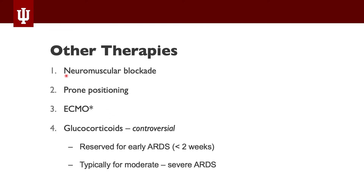Other therapies include neuromuscular blockade — completely paralyzing the patient to improve ventilator synchrony, because any dyssynchrony such as double-breathing can cause more volutrauma and barotrauma. This is reserved for severe cases. We may also try the prone position: since the relatively normal lung is in the anterior segments, placing the patient prone encourages blood flow to those normal parts of the lung, improving oxygenation.